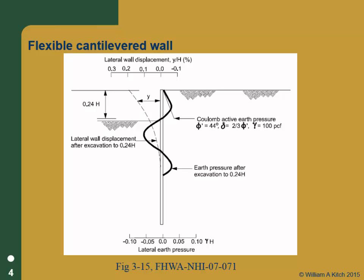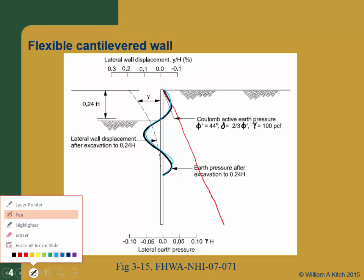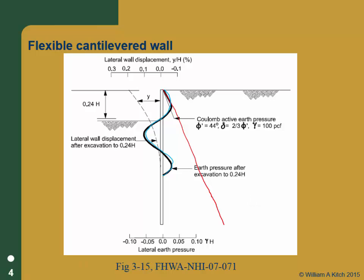That's not what actually happens with a flexible wall. All walls are flexible to some extent, but if you think about a sheet pile wall, they're quite flexible. If we look at a flexible wall — this is a figure out of your manual — this would be the Coulomb envelope you would have behind the wall. The black line here represents the actual earth pressures on the wall, and this is our deflected wall shape. This is a wall that we've installed in the ground and then started to excavate behind — a cut wall system.